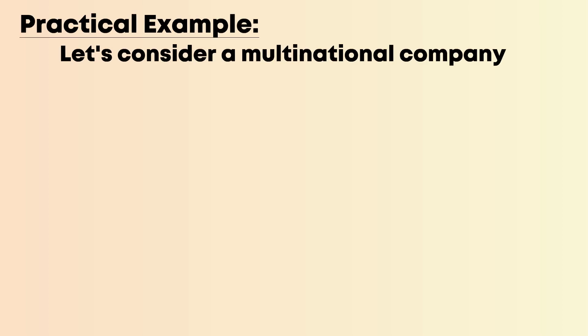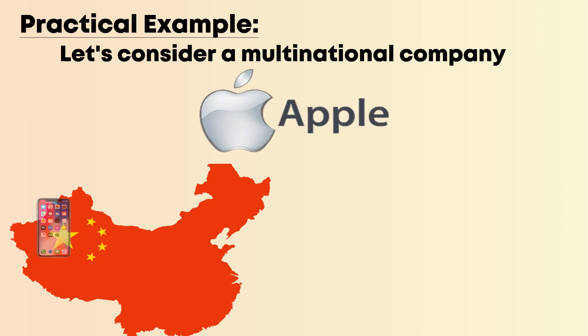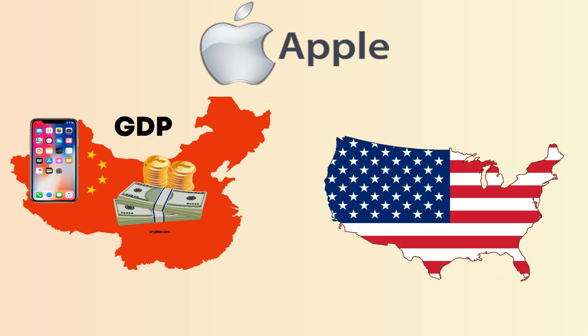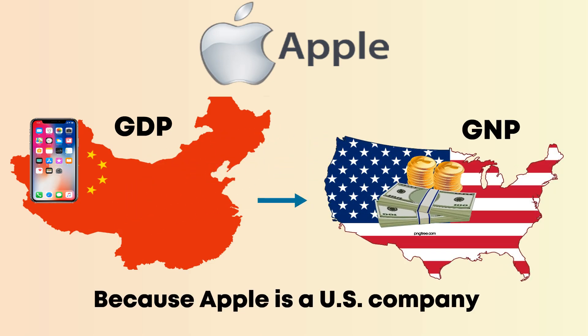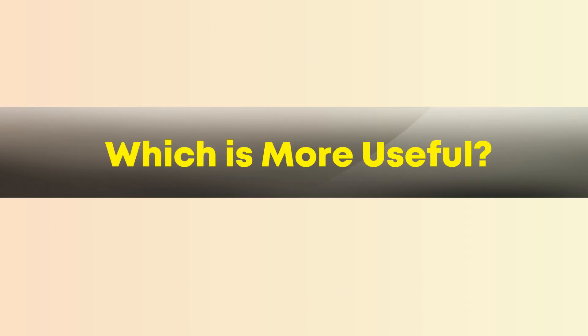Let's understand with a practical example. Consider a multinational company like Apple. The production of iPhones in China contributes to China's GDP, but contributes to the United States' GNP because Apple is a U.S. company, and its profits ultimately return to the U.S.